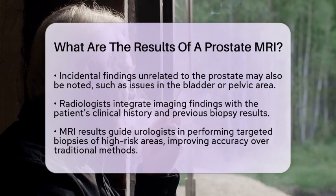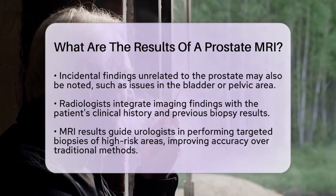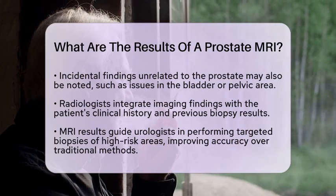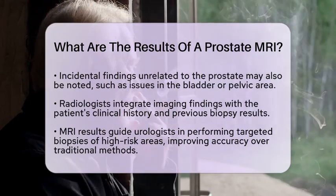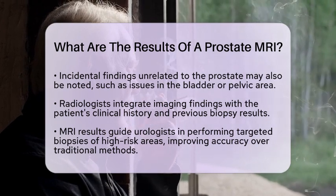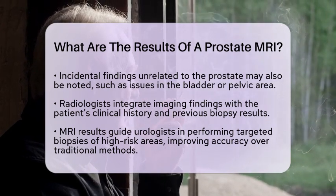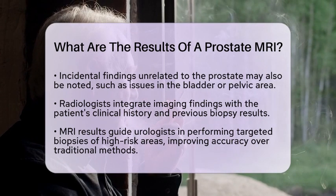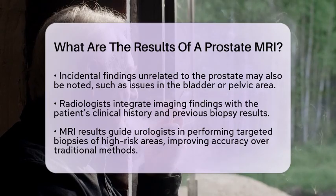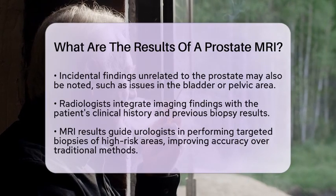For patients with low-risk cases, where the PIRADS score is 1 to 3 and the prostate-specific antigen levels are stable, MRI can be used to monitor the situation without immediate intervention.